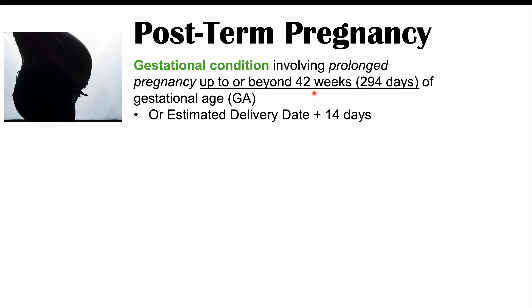Another way to define post-term pregnancy is the estimated delivery date plus 14 days. So once you hit that 14-day mark past the estimated delivery date, you are considered to have post-term pregnancy. The typical time for delivery is anywhere from 37 to 40 weeks, so once we get past 40 weeks and especially up to 42 weeks or beyond, that is post-term pregnancy.